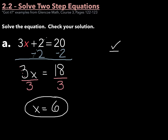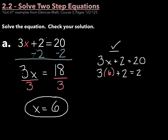For the check step, we always start by rewriting the original equation: 3x plus 2 equals 20. Next, substitute in what you think your answer is — 6 — for x. So 3 times 6 plus 2 should equal 20. Well, 3 times 6 is 18, plus 2 should equal 20. And sure enough, 18 plus 2 is 20, and 20 equals 20. So our answer is x equals 6.